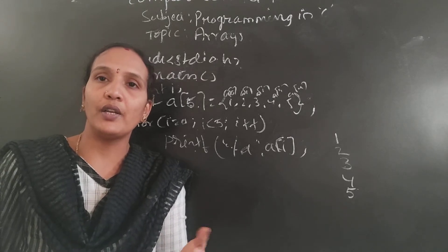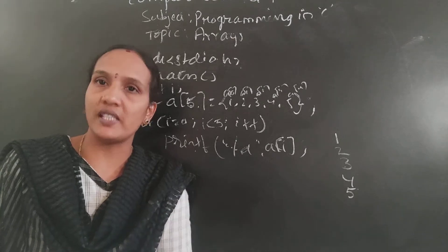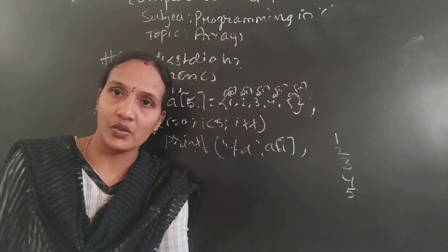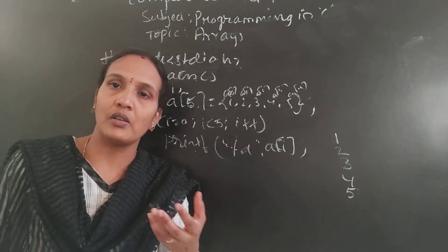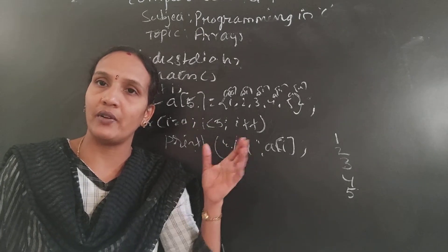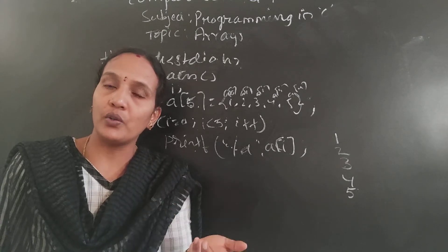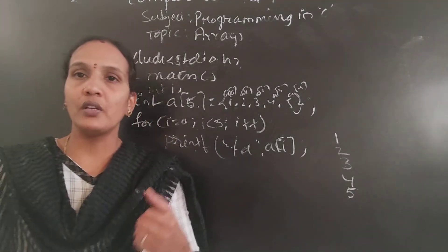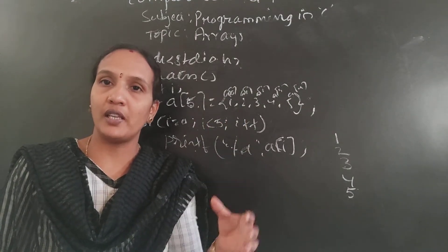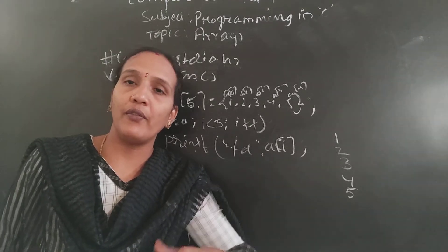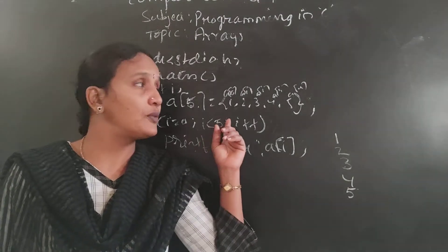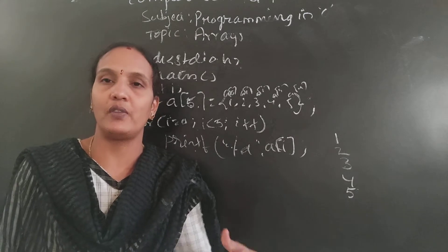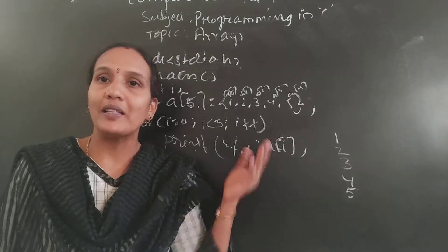In real-time applications, there may be a situation where you don't want to fix the value — every time you want to change the value. For example, this array I have created for one student. If I want to create one more array for a second student and store the second student's values, this array is not suitable because this array is created for only one student. So if you are fixing a value, every time you cannot change it — this procedure is not suitable.